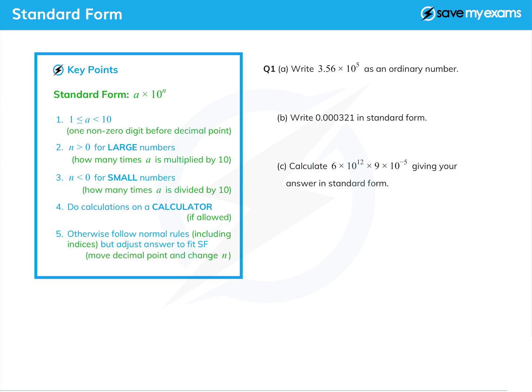If you have to do calculations, try and do them on a calculator. But of course sometimes you're not allowed to, and if you're not, just follow the normal rules including indices. But we might need to adjust our answer to fit standard form, which will involve moving the decimal point and changing 'n'. We'll see how that works as we go along.